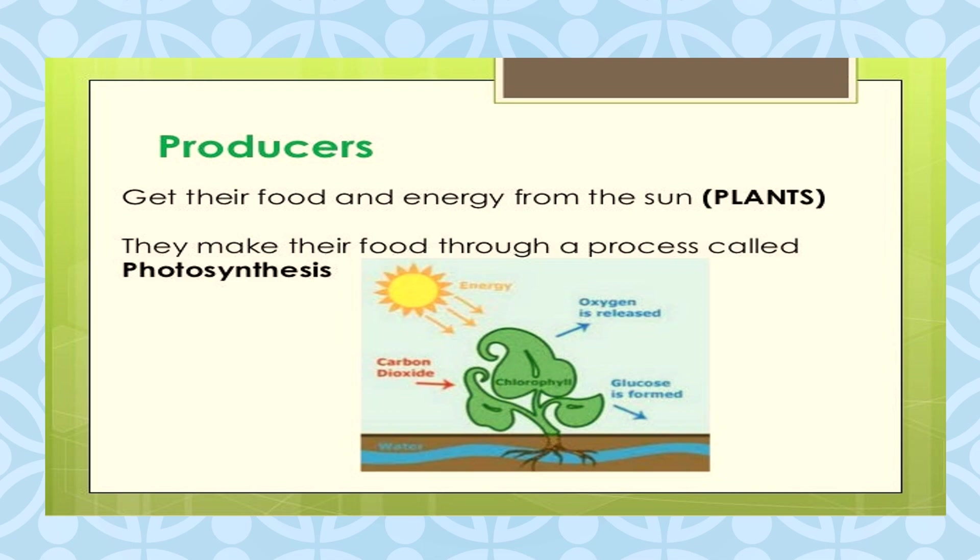Now we will take up the biotic component. Producers are the plants. Plants get their food and energy from the sun by the process of photosynthesis. Producers are those who produce, so plants are producers because they produce food for us. All living organisms need energy for their survival, and the ultimate source of energy is solar energy. Only green plants have the ability to use solar energy — they make their food in the presence of sunlight, water, minerals and carbon dioxide by photosynthesis. Thus, green plants are called producers or autotrophs.